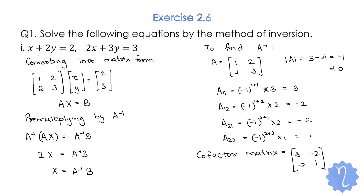We have found A inverse. Now X = A⁻¹ · B = [−3, 2 / 2, −1] · [2, 3]. Multiplying: (−3)(2) + (2)(3) = −6 + 6 = 0, and (2)(2) + (−1)(3) = 4 − 3 = 1. Therefore x = 0 and y = 1. You can verify by substituting back: both equations check out correctly.